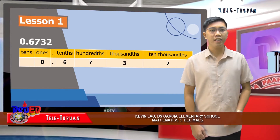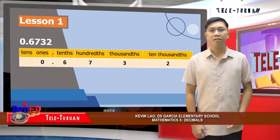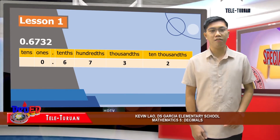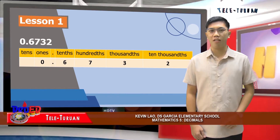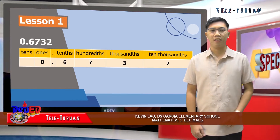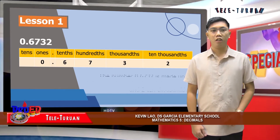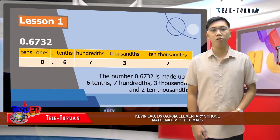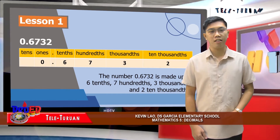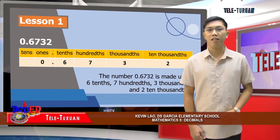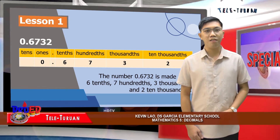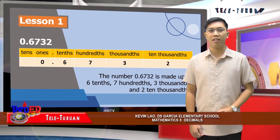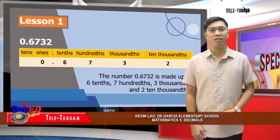Equivalently, the place value to the right is one-tenth of that to the left. In addition, the value of the tenths place is one-tenth the value of the ones place. The number six thousand seven hundred thirty and two ten-thousandths is made up of six tenths, seven hundredths, three thousandths, and two ten-thousandths.